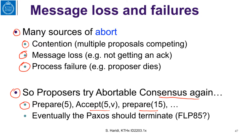As we know, consensus is not solvable in an asynchronous system, so this sequence of trials might not terminate — that is the FLP result we discussed before. The way to ensure termination is to guarantee contention-free execution with one leader that proposes, or to randomly wait before issuing new proposals, making the algorithm probabilistic. Eventually, you may be the only proposer with time to complete both the prepare phase and the accept phase.